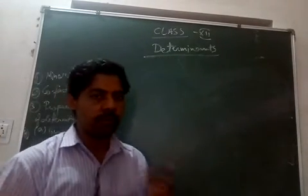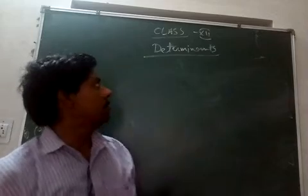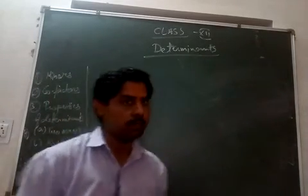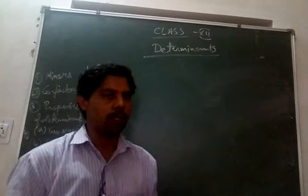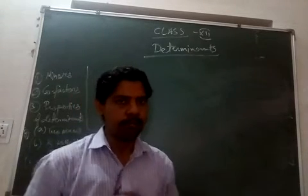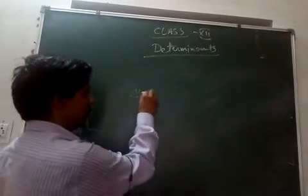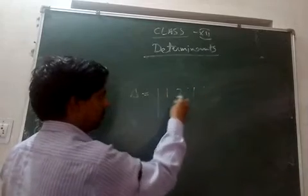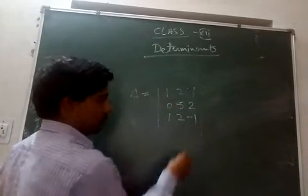Good morning. This class is for class 12 and we are doing determinants. In the last class I told you how to solve determinants, so I'll give you one more example so that we can understand determinants, cofactors, and minors. Suppose we have a determinant delta: 1 2 1 / 0 5 2 / 1 2 -1.